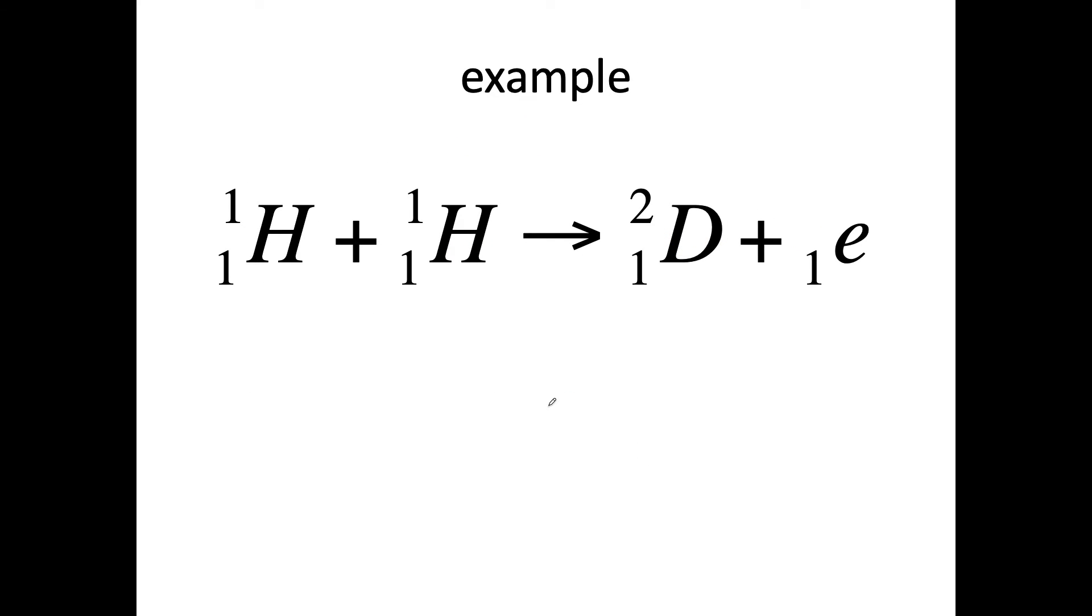So here's the example. And sometimes this is blank. If you want to put zero there, that's fine. So 1,1 H, this is hydrogen atom, plus another hydrogen atom, mass of one, proton one.